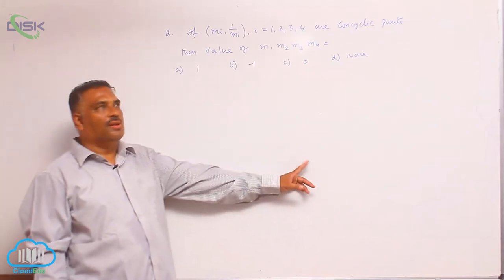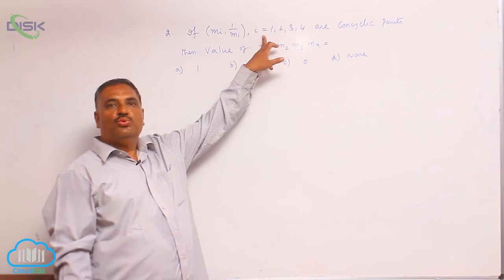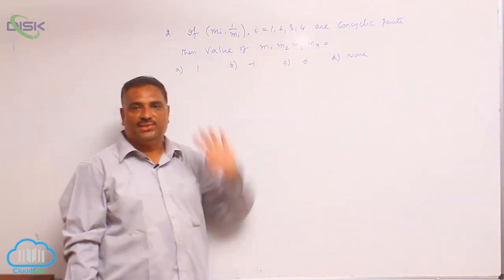Now, let us consider one more problem. If mi comma 1 by mi where i is equal to 1, 2, 3, 4 are concyclic points.